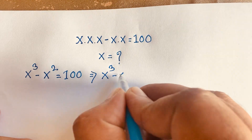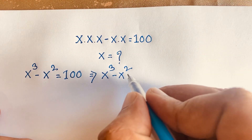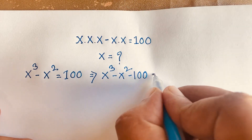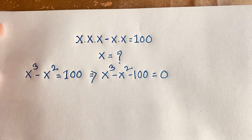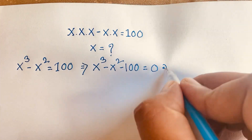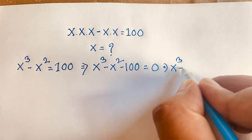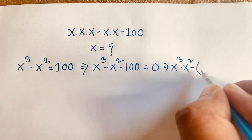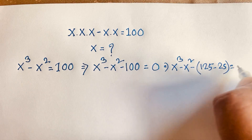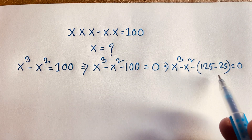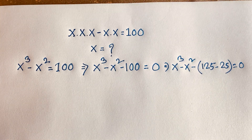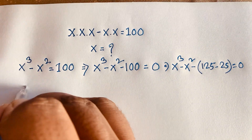I rewrite this as x to the power 3 minus x squared minus 100 equals 0. Now I notice that 100 equals 125 minus 25, so I replace 100 with 125 minus 25. That gives x to the power 3 minus x squared minus 125 plus 25 equals 0.